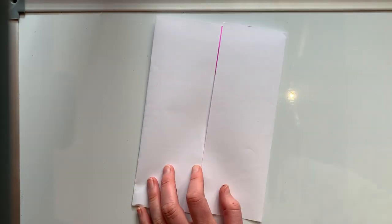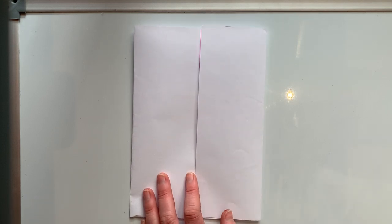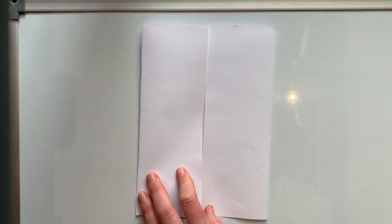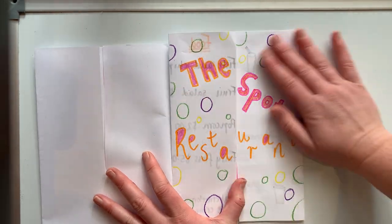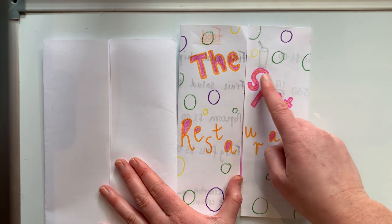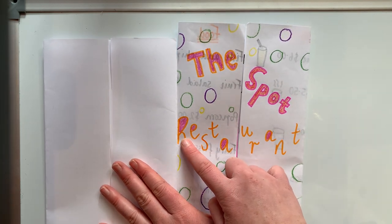The next part you're going to do is you need to think of a restaurant name — anything you like. I've actually decided to call mine the Spot Restaurant. You might like to call yours anything you like. Maybe it's your name and then the restaurant — so if Kevin was doing this activity, he might call it Kevin's Restaurant, or I could call it Hannah's Restaurant. On this front part of your menu, you're going to decorate the front cover. Make sure you've got a capital letter for each of the first letters in your words.